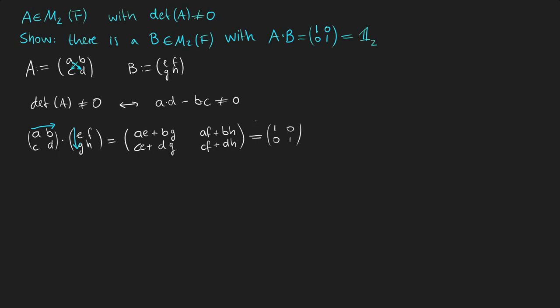And we want this matrix to equal the identity matrix which is 1, 0, 0, 1. Which means that the top left entry has to equal 1, so this term should equal 1. We also know that the top right entry should equal 0. This one should equal 0 too. And the bottom right entry should equal 1.